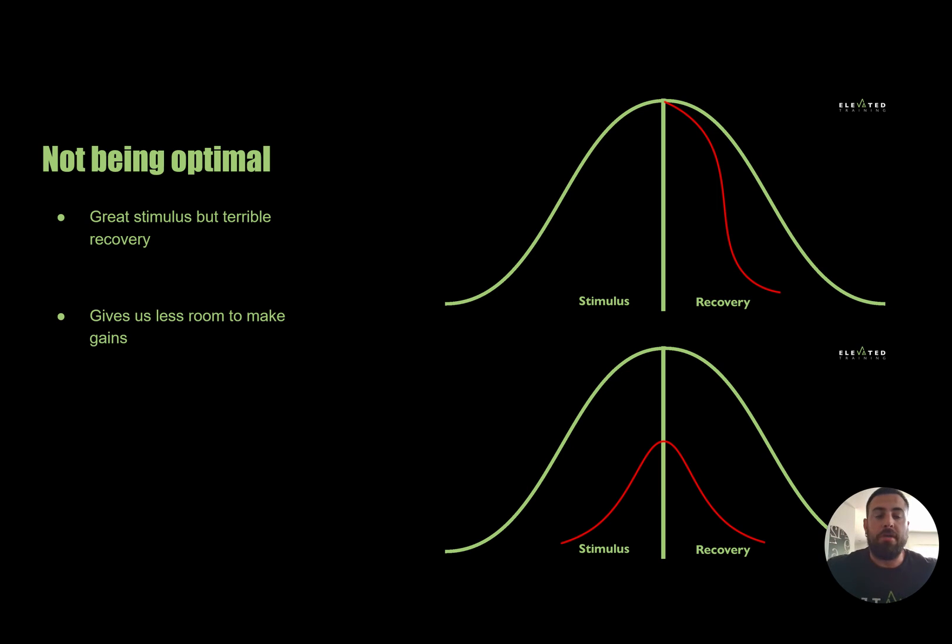So what happens when we're not being optimal and don't have this great giant green bell curve to work under? Well, if the stimulus is great - say someone with a lot of knowledge is programming for you and giving you this great program - but every other day you're having a drink or you're going out on the weekends partying or whatever it may be, your recovery kind of looks like this top bell curve. That red line of recovery is now being hindered because it's not being optimal.